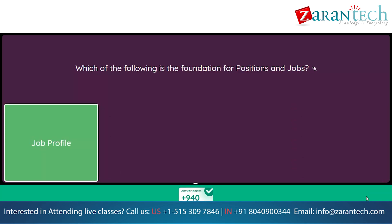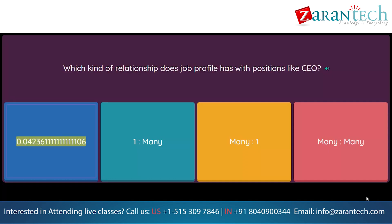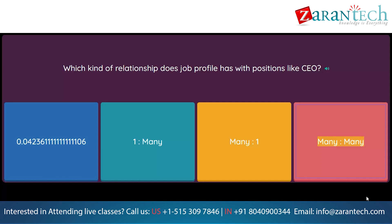Which kind of relationship does job profile have with positions like CEO? Option 1: One to One. Option 2: One to Many. Option 3: Many to One. Option 4: Many to Many.